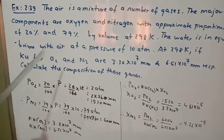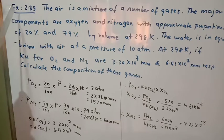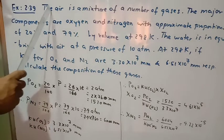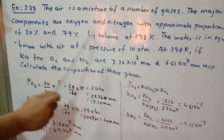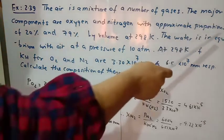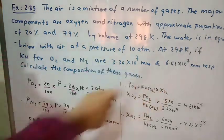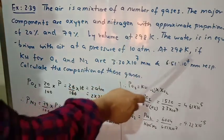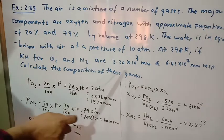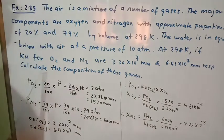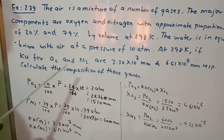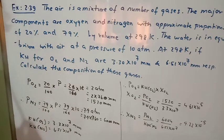Now this is a very important numerical from the textual exercise — question number 2.39. The air is a mixture of gases; the majority components are oxygen and nitrogen with approximate proportions of 20% and 79% by volume. At 298 K, water is in equilibrium with air at a pressure of 10 atm. KH for O2 and N2 are given in mmHg. Calculate the composition of these gases in water. This question is important — it involves Henry's law for two gases simultaneously.